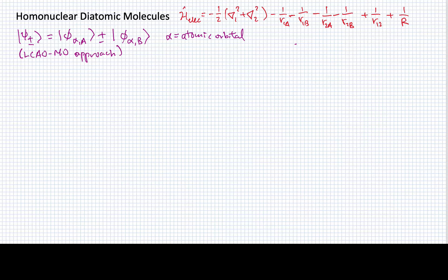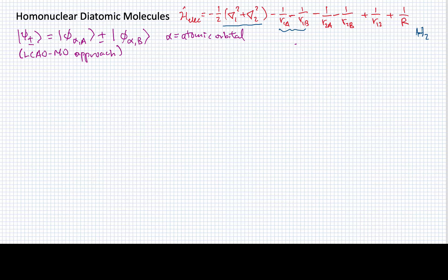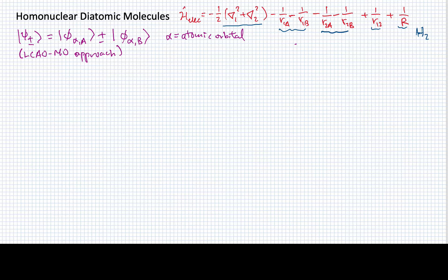I've written out the Hamiltonian that we would typically expect to find for some kind of diatomic molecule. This is in fact for H2, where we've got the kinetic energy of the electrons represented here. These terms represent the attractive forces that bind electron one with the two nuclei A and B. This would be the attractive Coulomb force for the other electron with the nuclei A and B. There is a repulsive Coulomb force between the two electrons and a repulsive force between the two nuclei. So this would be all of the terms that one would need to include in the Hamiltonian.